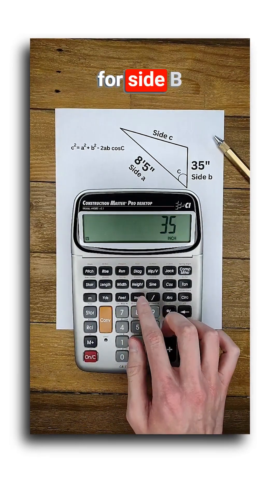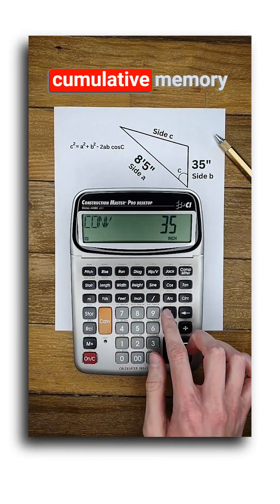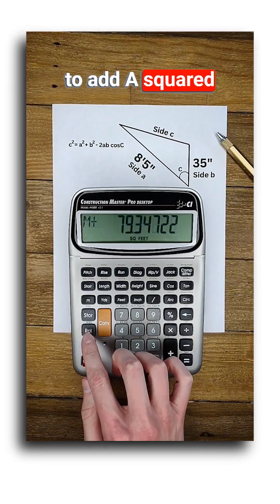Now 35 inches for side B, square it and put it in cumulative memory, and push recall twice to add A squared and B squared.